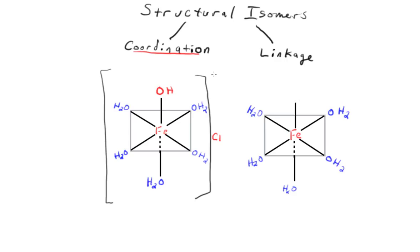The charge on this is going to be positive because we have a hydroxide. We don't have enough negative ligands, so we need a counter ion. In this case, it's going to be chloride.